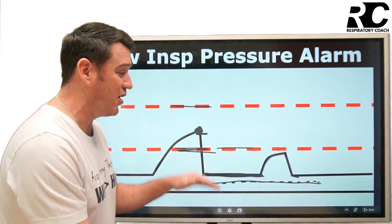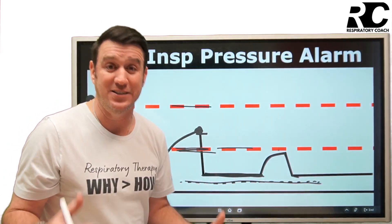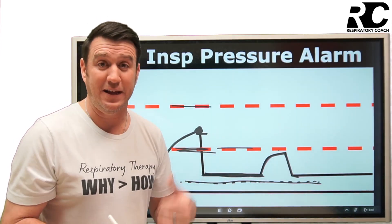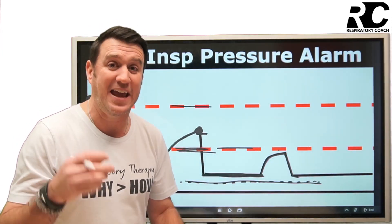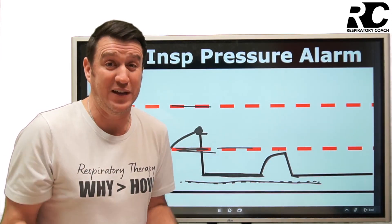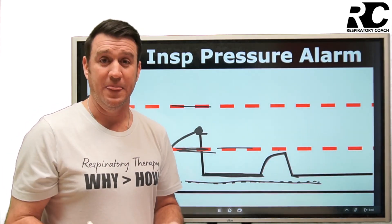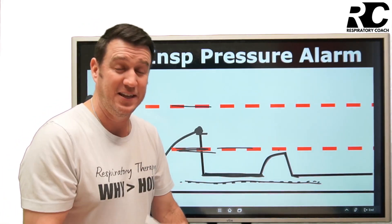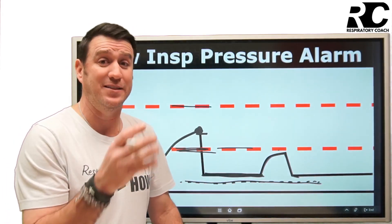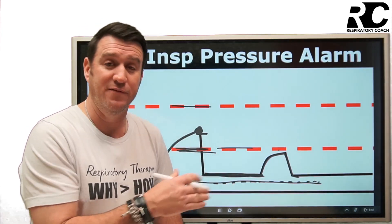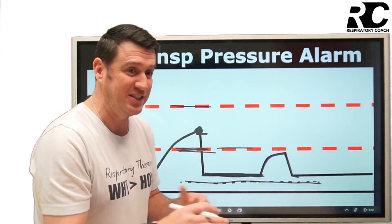Most commonly, if you get this alarm it's because of a leak — somewhere in the circuit or at the airway. Think of it like a nail in a car or bicycle tire: the leak causes pressure to drop. To fix it, you have to find and fix the leak. During mechanical ventilation, a low inspiratory pressure alarm means you need to assess the patient-ventilator interaction for a potential leak. It can occur at the ventilator, within the circuit, or at the artificial airway. For patient safety, start your investigation at the patient.